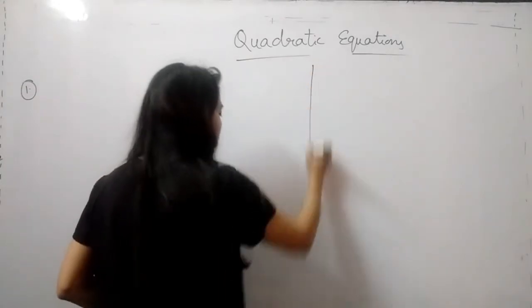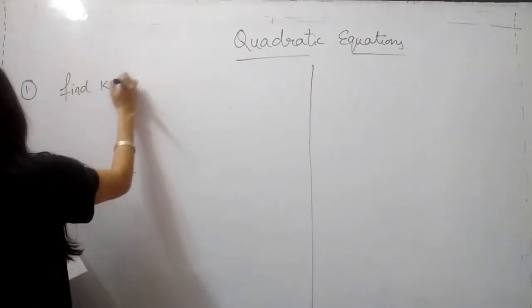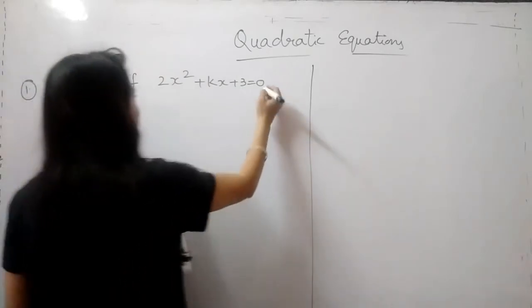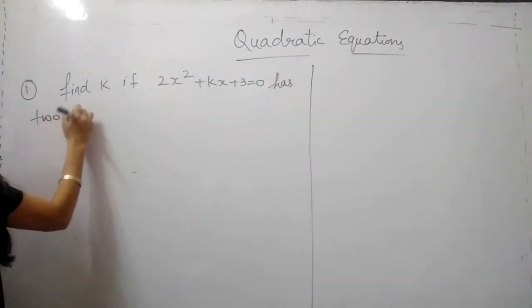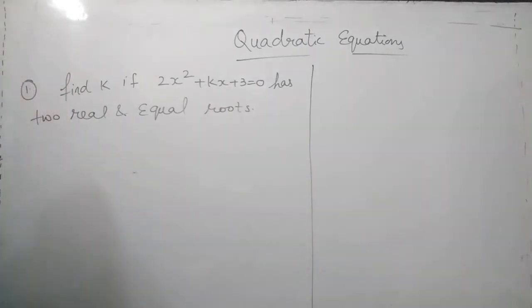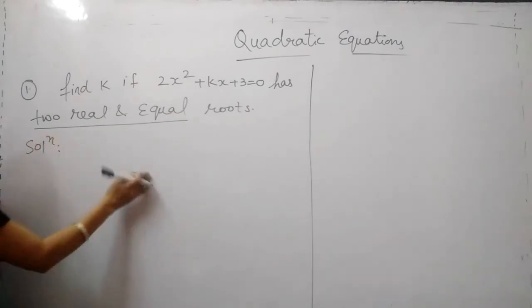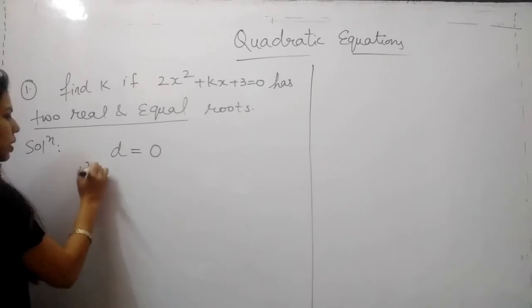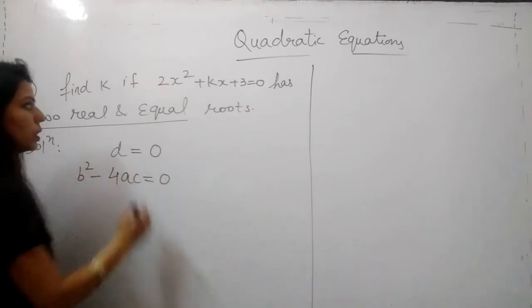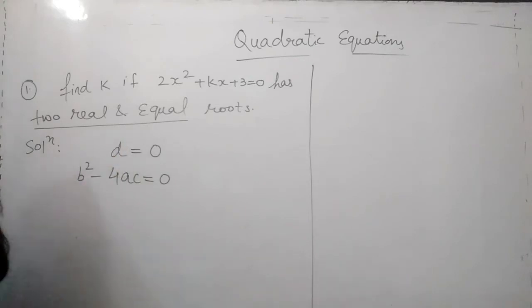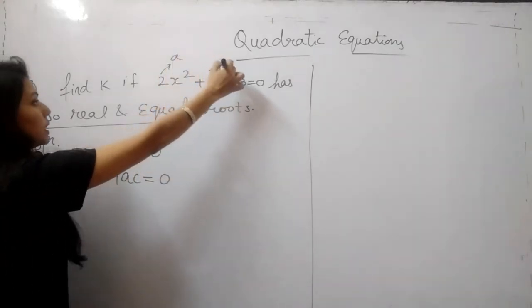In the first question, find k if 2x square plus kx plus 3 equal to 0 has 2 real and equal roots. Here the nature of the roots is already given that is real and equal. When the roots are real and equal, the value of discriminant should be equal to 0. Where discriminant is b square minus 4ac equal to 0. Now you all are very familiar with what is discriminant, what is b, what is a, what is c. So we will just take the values, this is a, this is b and this is c.